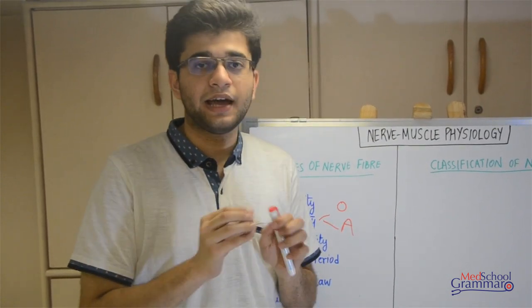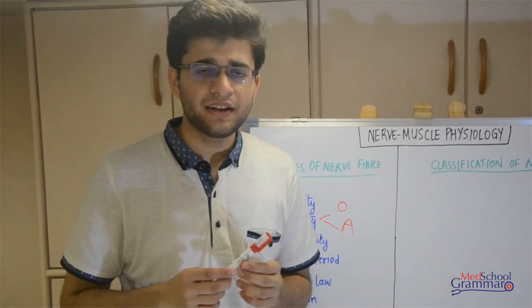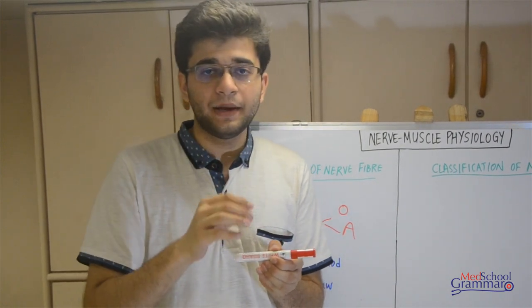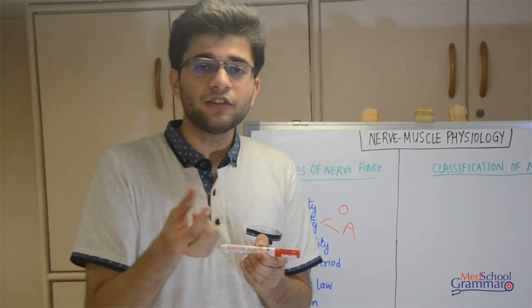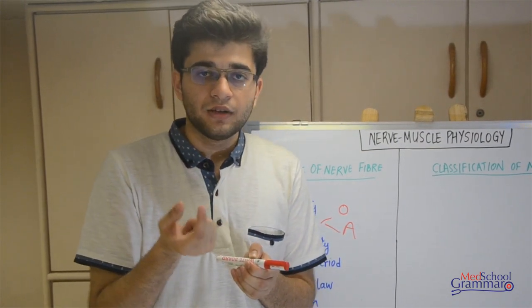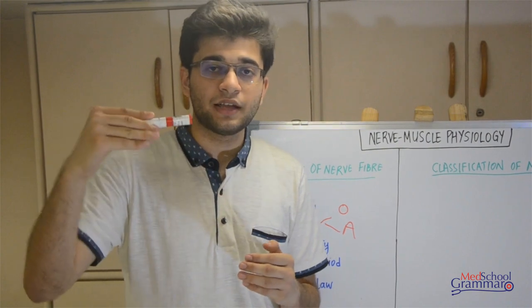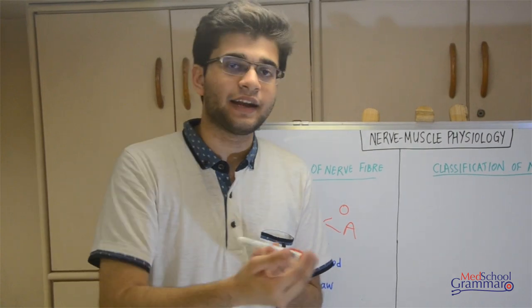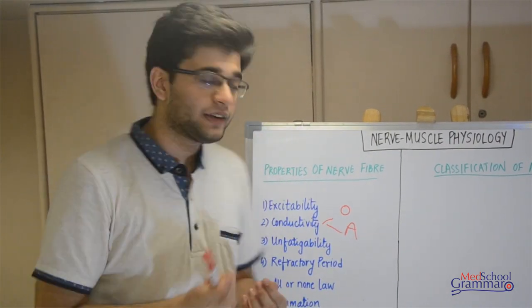The fourth property is the refractory period — the delay between the time of stimulus and the first recorded response. For example, when a nerve fiber is stimulated, there is a very minute difference between the stimulus time and the response time, due to the time taken for ion exchange and for the threshold to be reached for action potential generation.